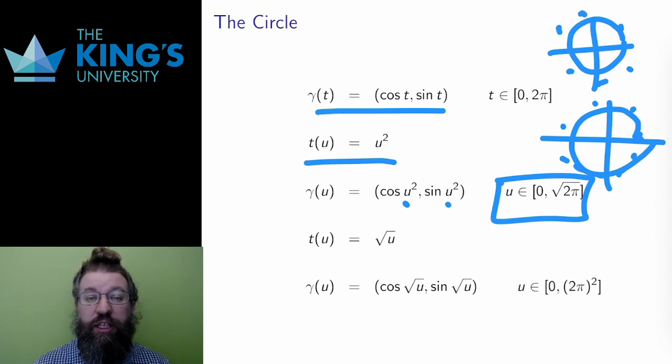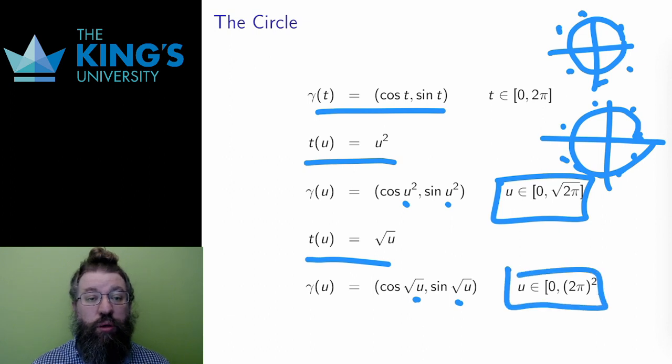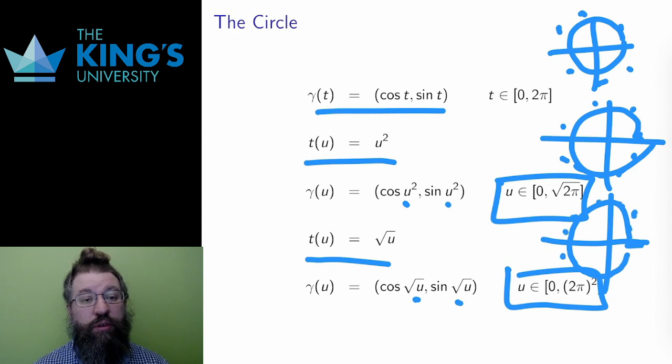The opposite happens for t equals root u. I again change the domain to match, so it is from 0 to 2 pi squared. The square root covers less distance over time as it goes along, so the movement along the curve is now decelerating, taking longer to move along near the end of the circle.